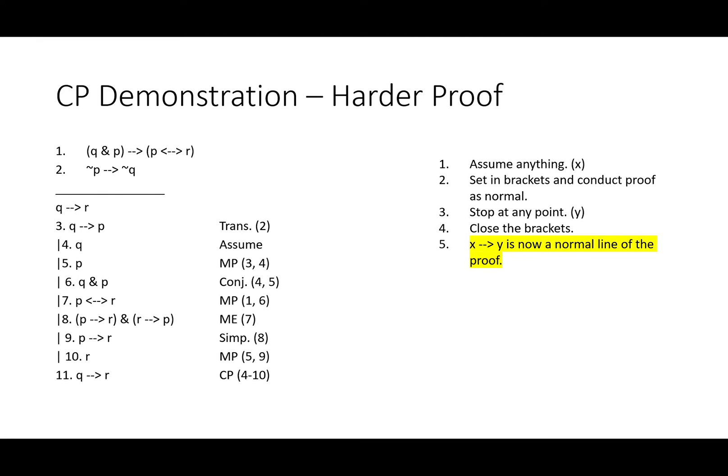We've seen that conditional proof allows you to introduce an arrow where there was none before. It allows you to make an assumption and show that anything entailed by that assumption gives you a new conditional. And you can use that conditional for whatever you please. Hopefully, conditional proof will make your life a little bit easier once you've got some practice using it.